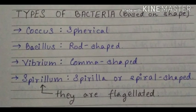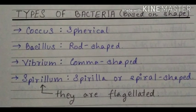Now let's move on to the different types of bacteria based on their shape. There are four main types: Coccus is spherical shaped, Bacillus is rod shaped, Vibrio which is comma shaped, and Spirillum or Spirilla is spiral shaped.